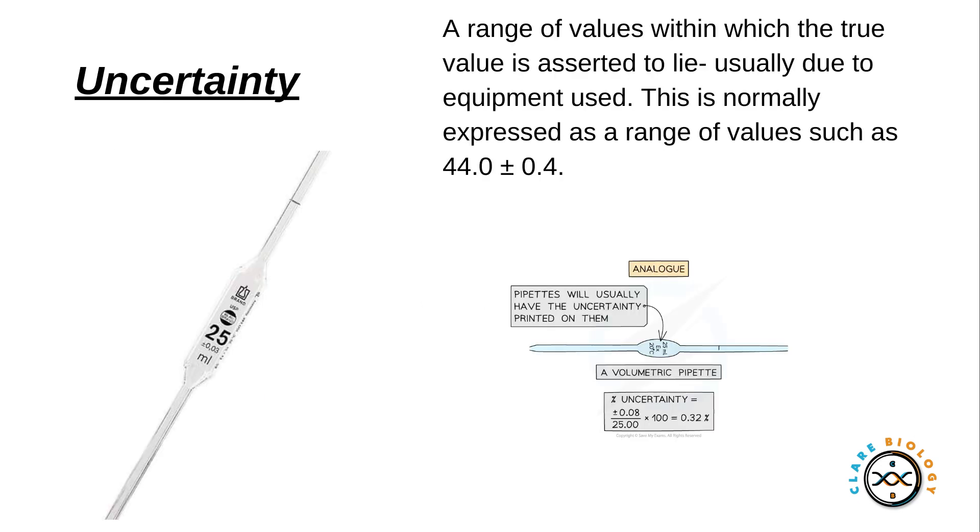Uncertainty. This is where I use equipment and on the equipment it tells you that your true value of 25 milliliters I'm trying to measure with this pipette, I could vary between 0.03 milliliters. And you can use a formula to work out the percentage uncertainty of what you're measuring.